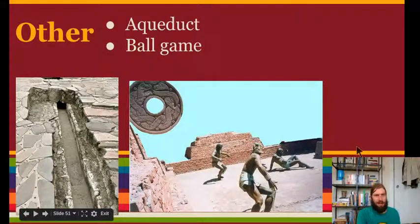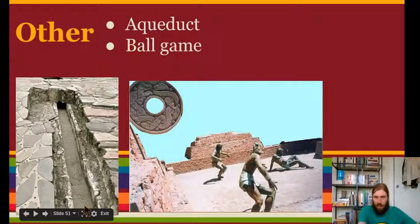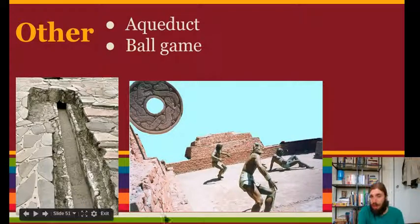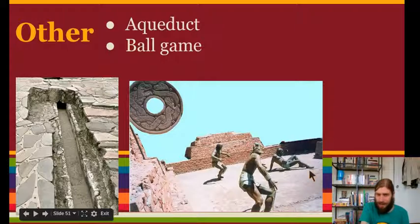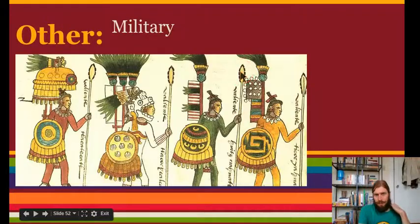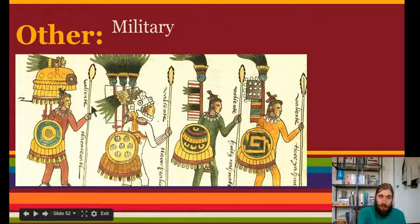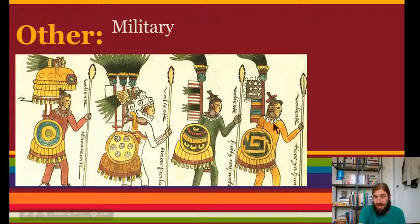Some other important things about the Aztecs: they built aqueducts, which are like pipes for transporting water into the city so they could have fountains and baths. They also played a ball game, just like the Mayans — this is a modern recreation of the game they think the Aztecs played. The military was also very important. Here's a picture of Aztec warriors with many different uniforms showing their rank. Military was a key part of Aztec life because attacking other peoples was one of the ways they got their money.